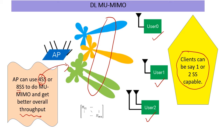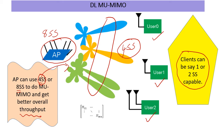If you bought an 8 SS AP but have only 3 clients totaling 4 SS, can you get some advantage? Definitely yes. Because if you have a higher number of stream capability, that can help you do what we call better downlink multi-user beamforming. So a higher stream capability AP is going to give us not only plain DL-MU-MIMO, but also potentially better-performing MU-MIMO. Keep that as one advantage.